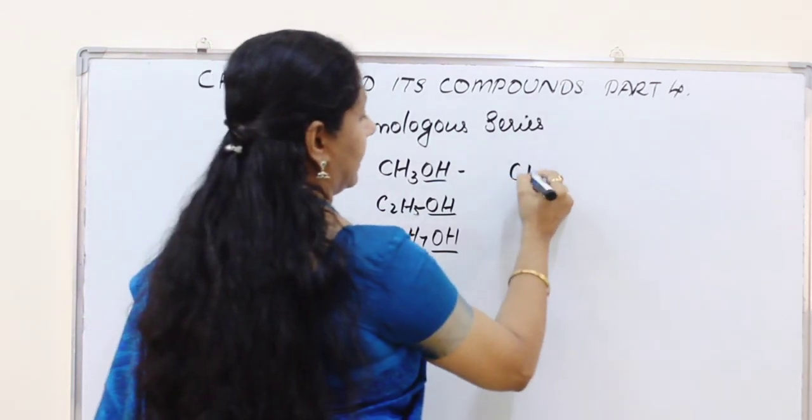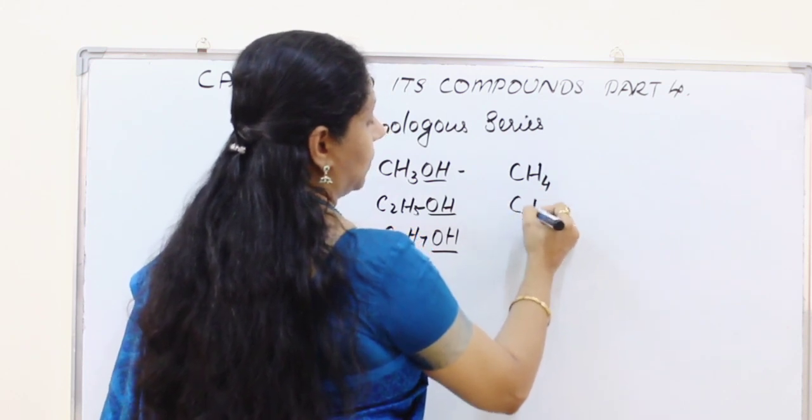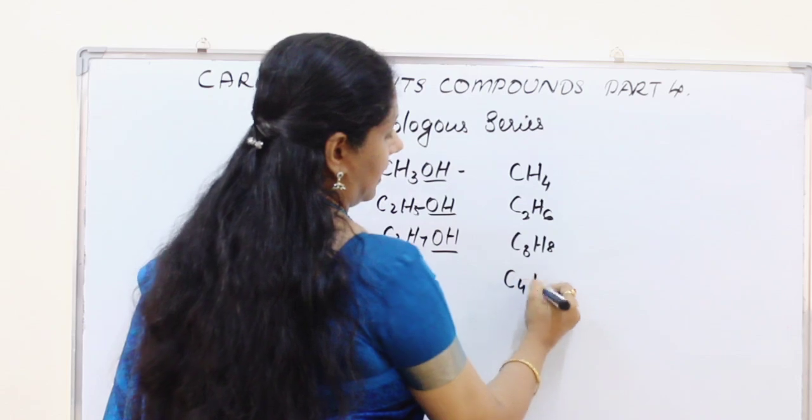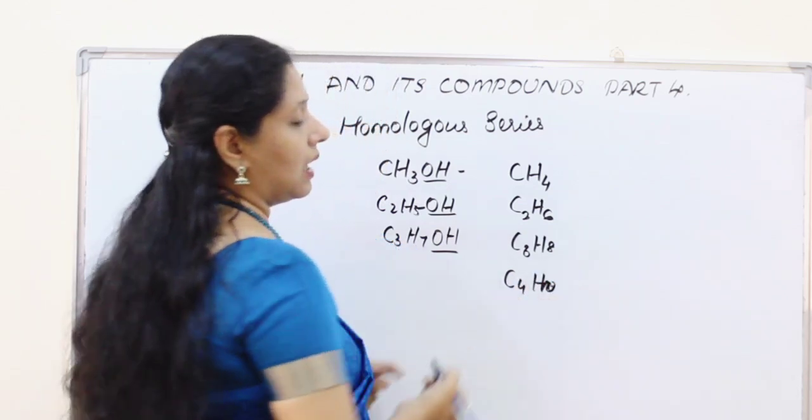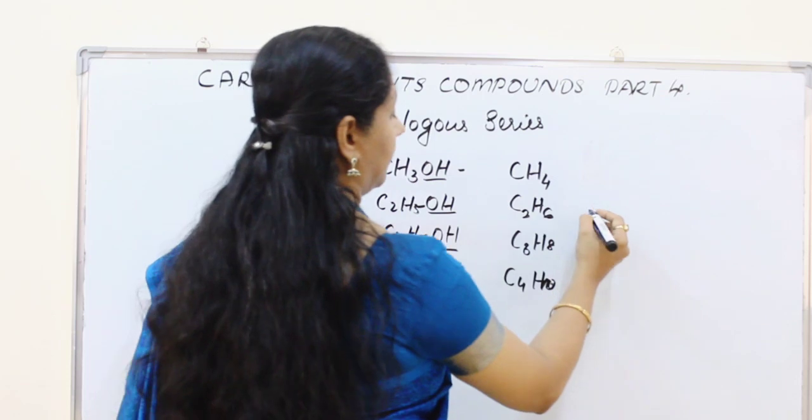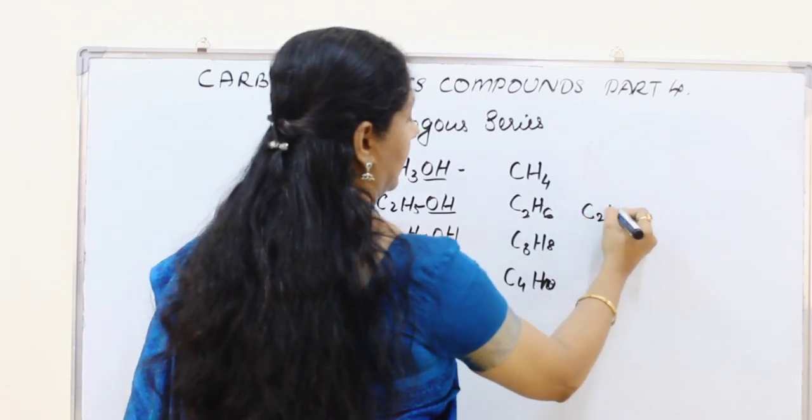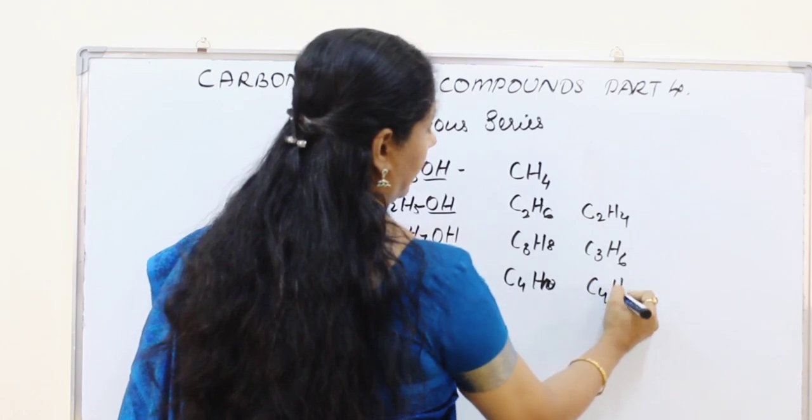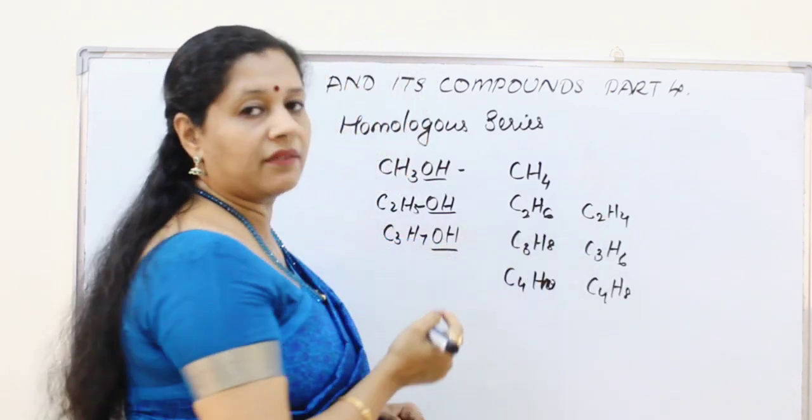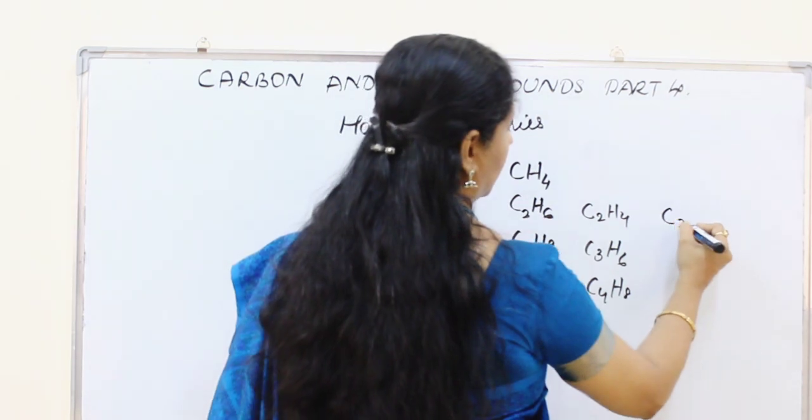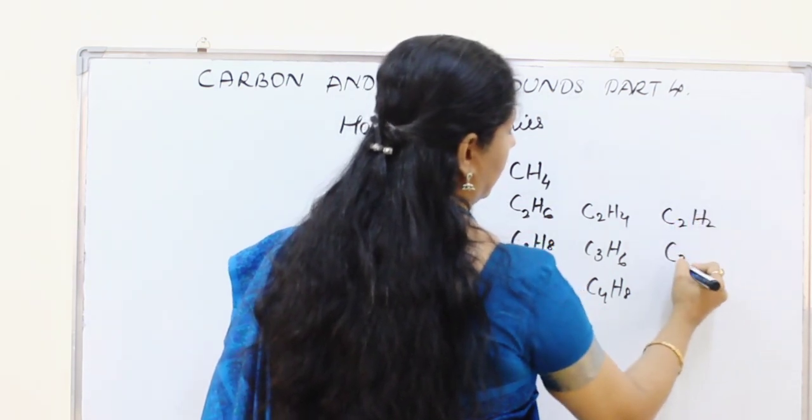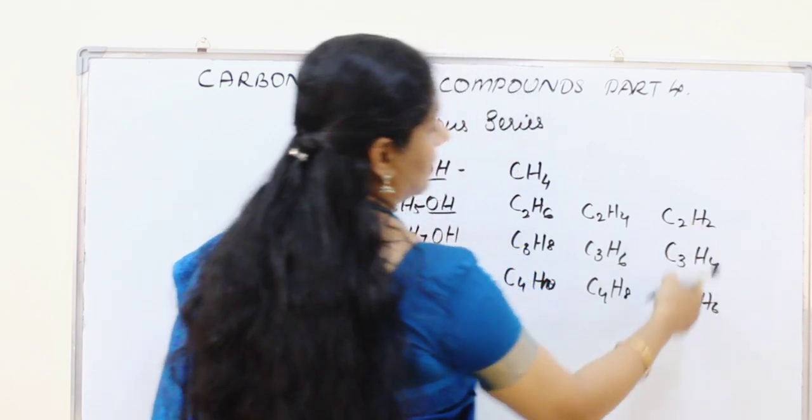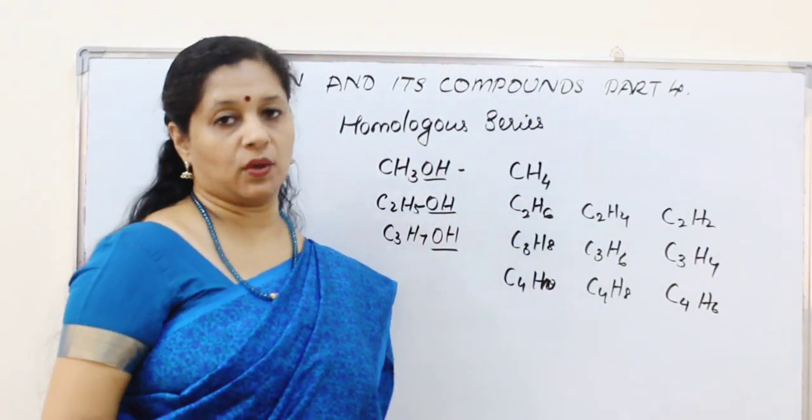The same way if I write the simplest alkanes group: CH4, C2H6, C3H8, C4H10. This is also another homologous series of alkanes. If I write C2H4, C3H6, C4H8, then it becomes series of alkenes. The same way C2H2, C3H4, C4H6, this will make us the alkyne series or the triple bonds.